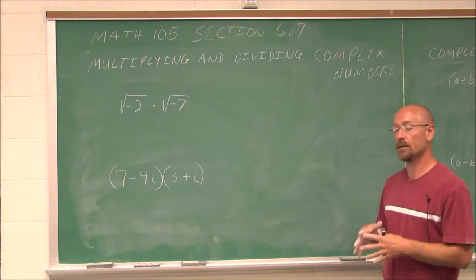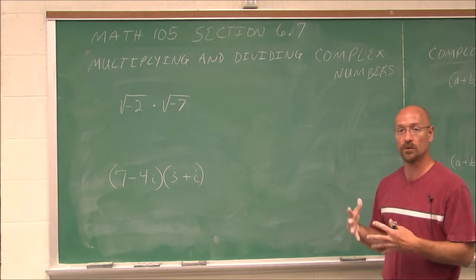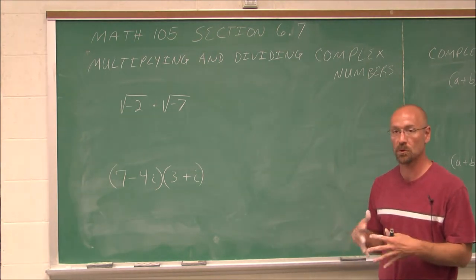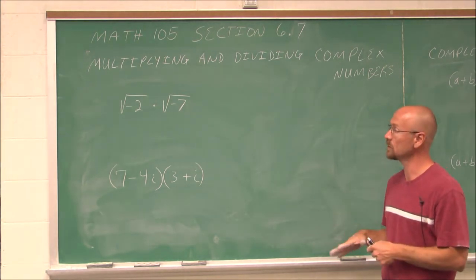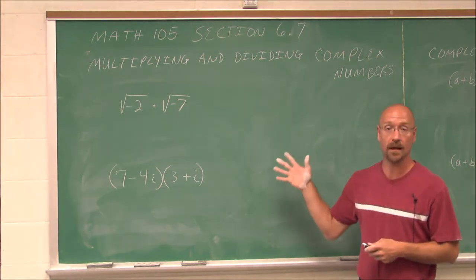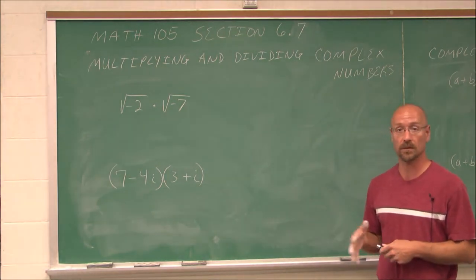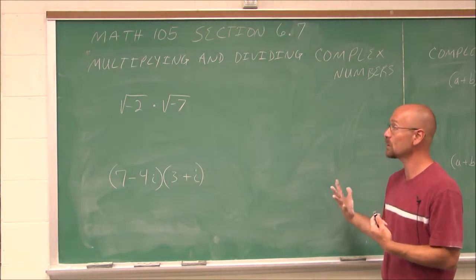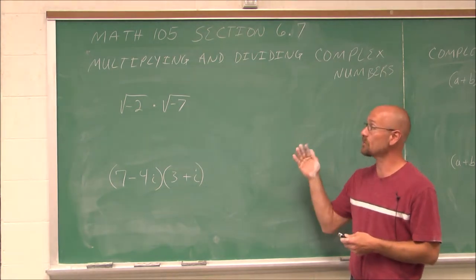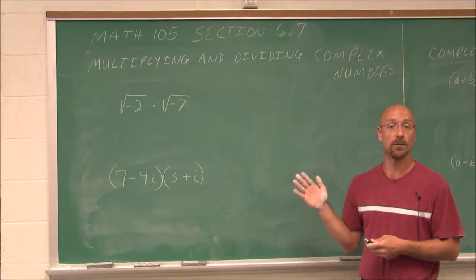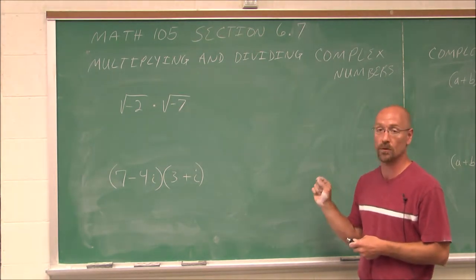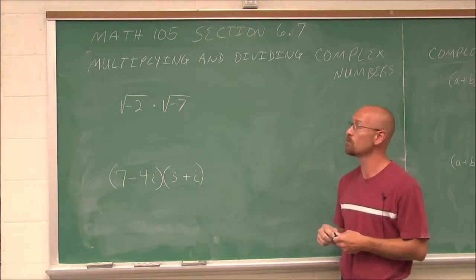Keep in mind, all the rules of math that we've learned — addition, subtraction, multiplication, division — still hold true in the complex number system. So we don't have to learn anything new, except we have to deal with that one imaginary unit, the square root of negative 1.